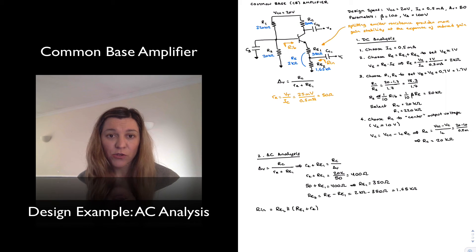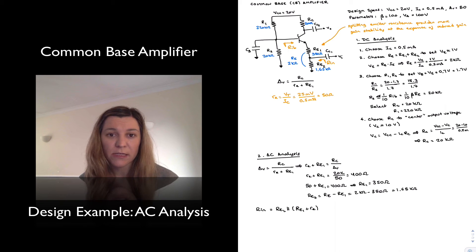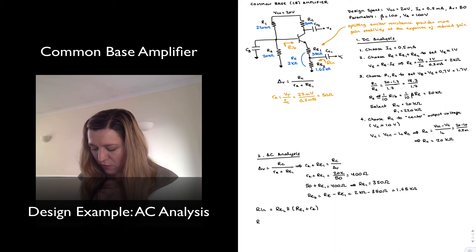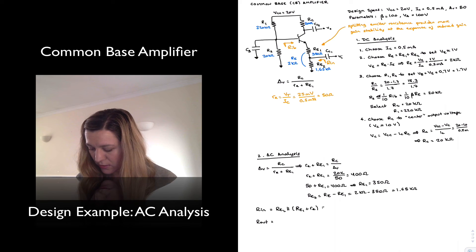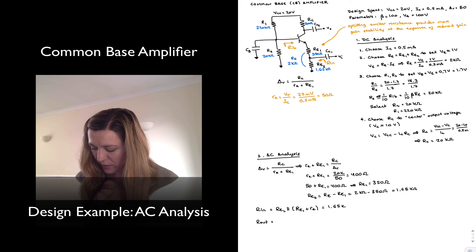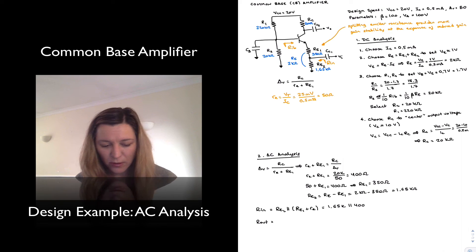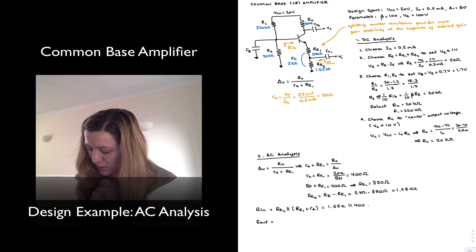If we've designed the circuit so that RE1 swamps little re, we can approximate the input resistance as the parallel combination of RE1 and RE2, which will be 1.65 kΩ in parallel with 350 ohms, approximately 350 ohms.